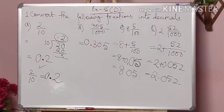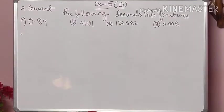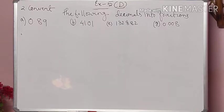I think you have got this. Now copy question number 2. As we have done question number 1, now we are going to do question number 2. What does question number 2 say? Convert the following decimals into fractions. That means it is just the vice versa — the opposite of earlier. In the earlier question, fractions were there and we converted them into decimals. Now the decimals are present and we have to convert these decimals into fractions.